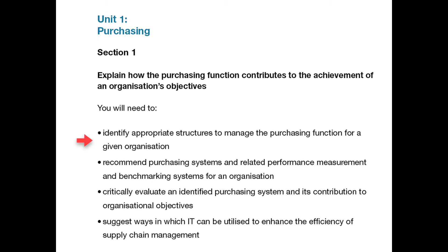For bullet point 2, you need to select and describe a particular organisation, ideally your own, but if not then one that is typical of your sector, and recommend a purchasing system, described in outline, and ways and mechanisms of monitoring the performance of that system against in-house targets and performance levels achieved by other organisations.